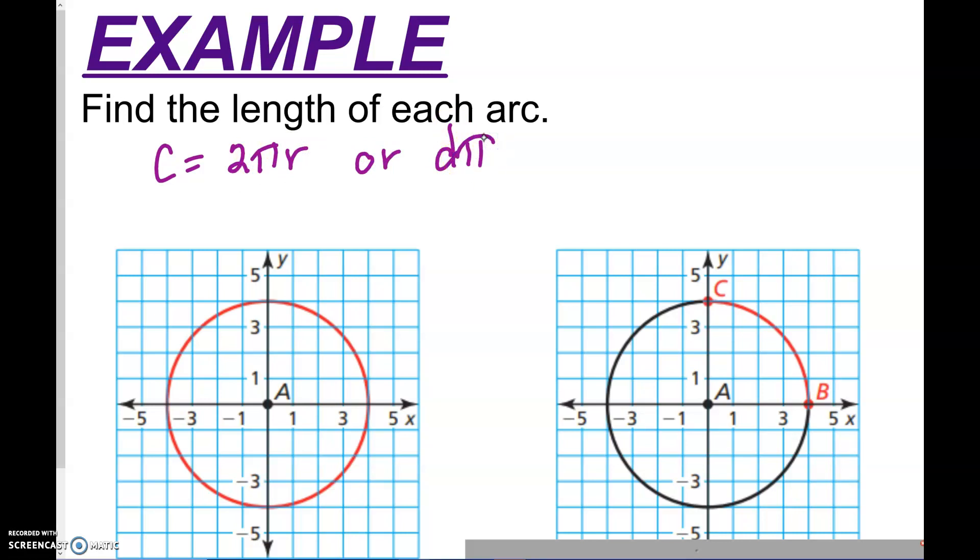So circumference equals 2 pi r or diameter times pi. You can use either formula depending on what you're given. So because this is on a nice coordinate plane, we can count 1, 2, 3, 4. So we can put a 4 in here, and 2 times 4 is 8.